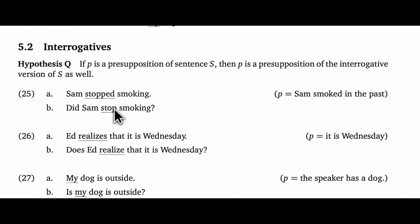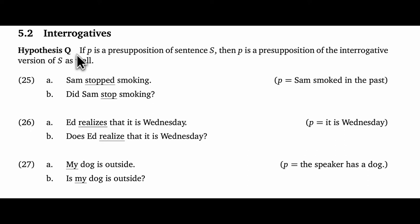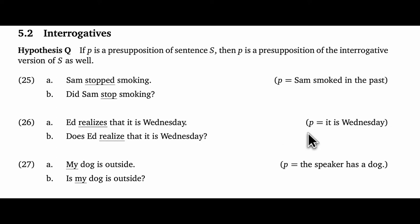Let's move to our second test, focused on interrogatives. Our core hypothesis is Hypothesis Q and it has the same structure as Hypothesis N: if proposition P is a presupposition of sentence S, then P is a presupposition of the interrogative version of S as well. Starting with 'Sam stopped smoking' and targeting the meaning that Sam smoked in the past, our interrogative version is 'Did Sam stop smoking?' Asking this question commits the speaker to our target meaning. Similarly, 'Does Ed realize it's Wednesday?' commits you to it being Wednesday. And for 'Is my dog outside?' — there's no construal of that question where it queries whether the speaker has a dog, supporting our presuppositional analysis of the possessive.